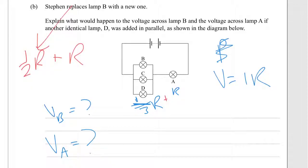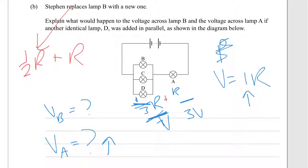We've got less resistance in the circuit overall, which means more current flowing through, so therefore we'd expect more voltage across Lamp A. With the BCD parallel branch having less resistance, it's taking less of the ratio of the resistance and therefore less of the ratio of the voltage. You'd divide up the voltage in roughly a 3 to 1 ratio. You can't say exactly it'll be a third, but you could say approximately — and note that these are non-ohmic conductors.